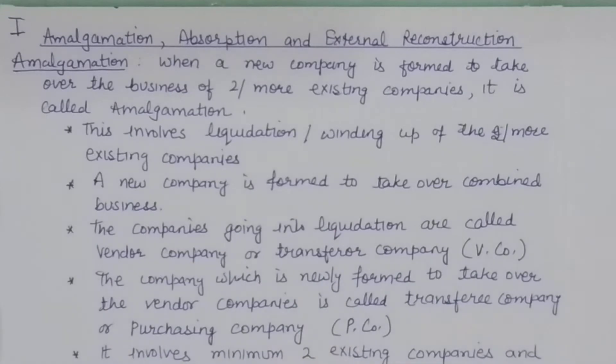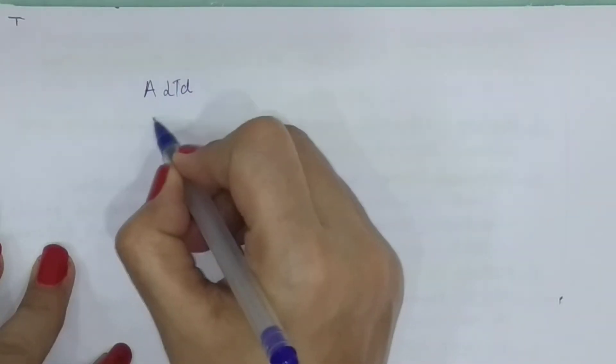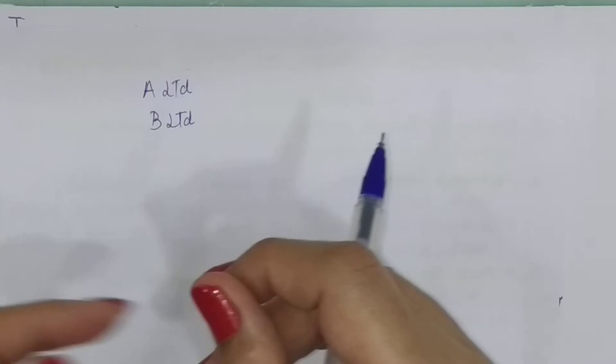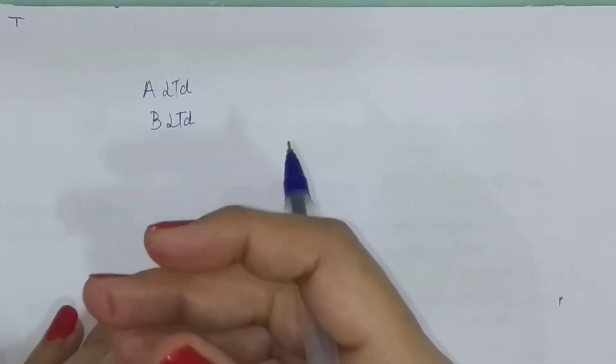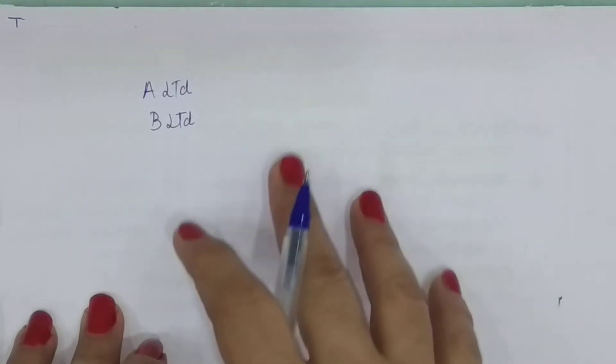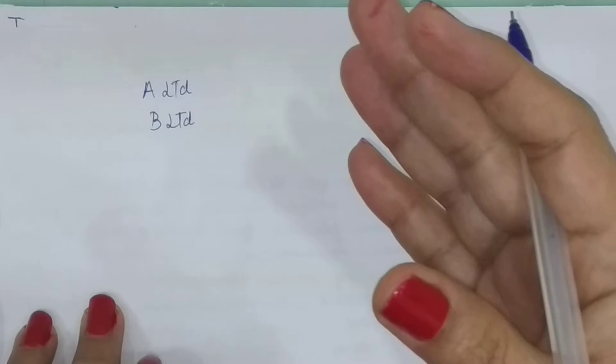Before we start with the definition, let us first understand a few things with an example. Suppose there are two companies — A Limited and B Limited — and they want to join their business, work together, combine their business, maybe to expand business activity or to take advantage of economies of scale.